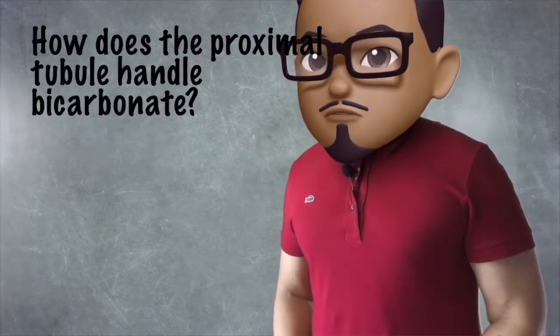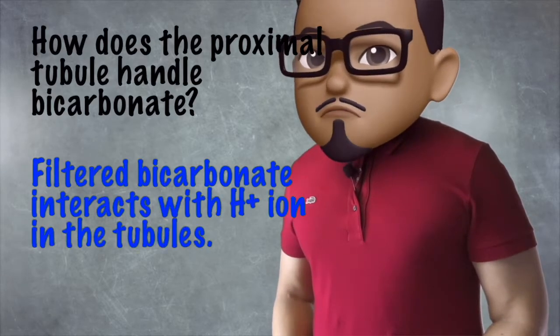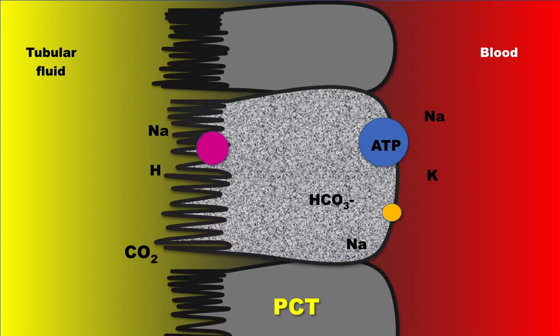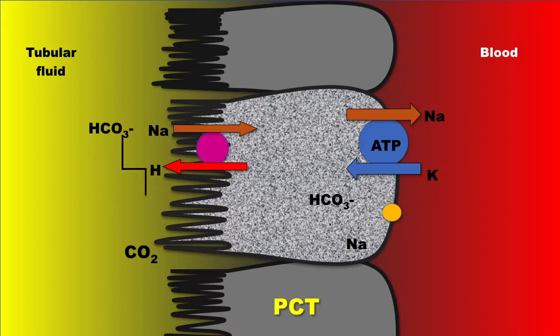How does the proximal tubule handle bicarbonate? Always remember that filtered bicarbonate interacts with the hydrogen ion in the tubules. Bicarbonate reabsorption is initiated by reaction between filtered bicarbonate and secreted hydrogen by tubular cells. Bicarbonate cannot enter the cell such that it has to be converted to carbon dioxide and water via carbonic anhydrase from carbonic acid.